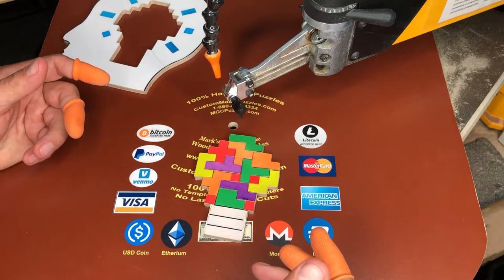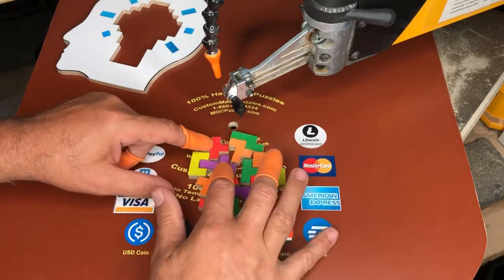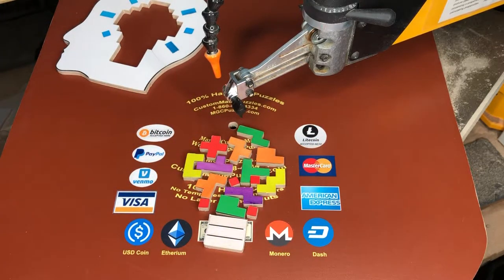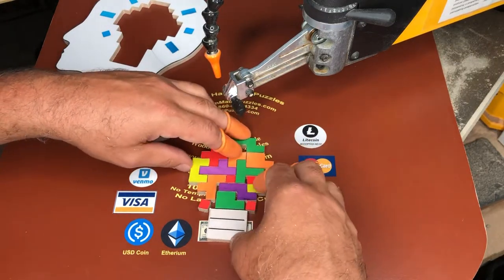As you can see, it's all broken apart and you have to assemble it just right in order to get it to go back into the brain of the silhouette of the puzzle.